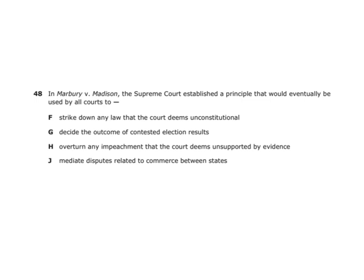In Marbury v. Madison, the Supreme Court established a principle that would eventually be used by all courts — judicial review. The Supreme Court and all courts could overrule things if a law was deemed unconstitutional. Any law has to line up with our Constitution to be allowable and effective.